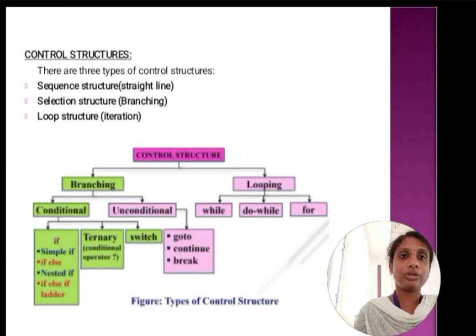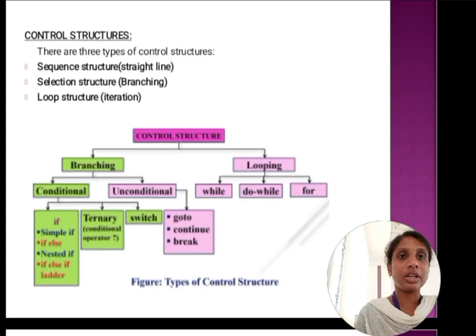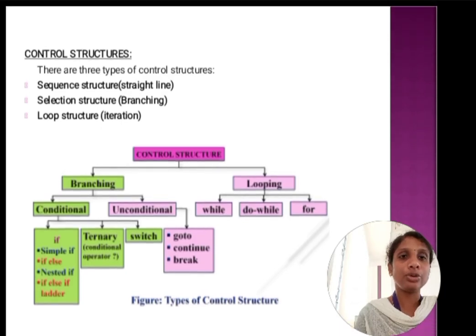Next, we are going to see about control structures. The control structures control the execution of the program. There are three types of control structures: sequence structure, selection structure, and loop structure. Sequence structure is also called straight line. Selection structure is also called branching. Loop structure is also known as iteration. Control structures are classified into two types: branching and looping. Branching is further divided into two types: conditional and unconditional. Looping is divided into while, do while, and for.